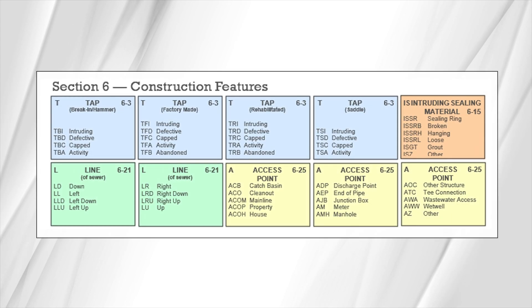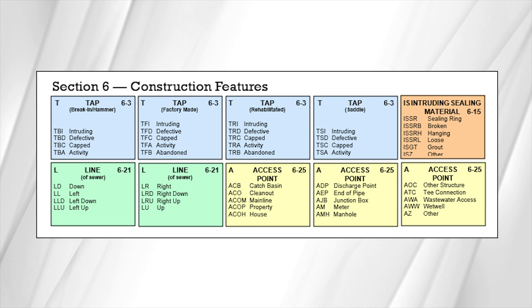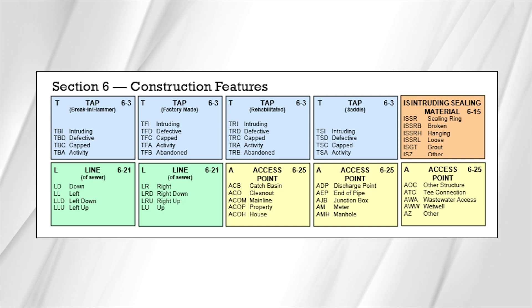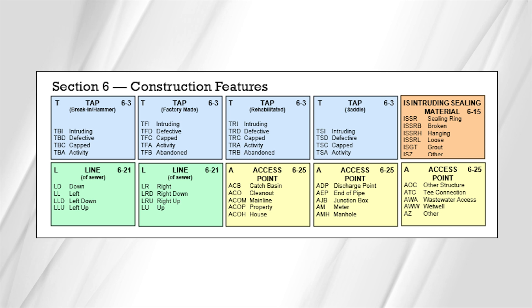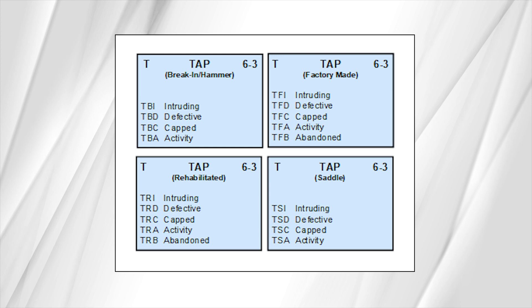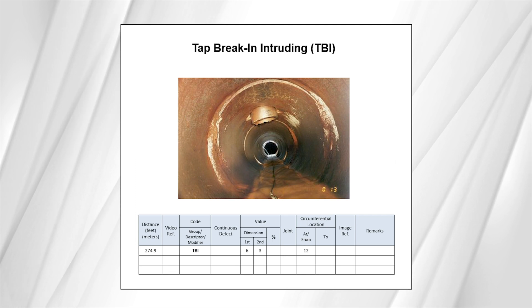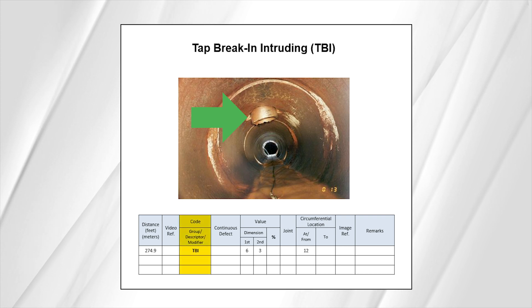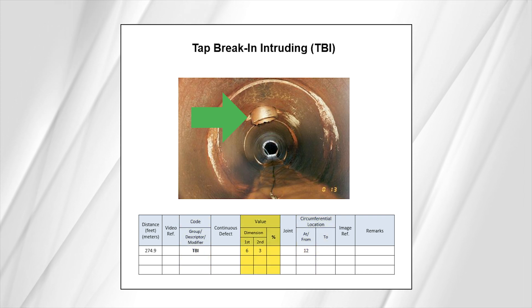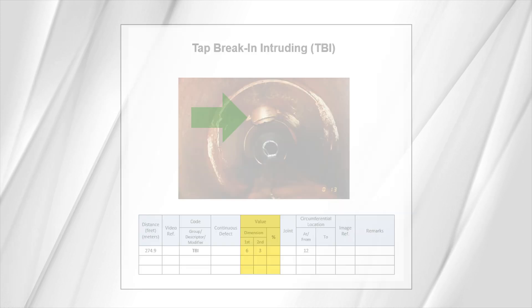The third family of codes is construction features. These codes are used to describe various features and conditions associated with the methods used to construct and connect pipes. We will highlight taps, access points, and line codes. Tap codes are used to describe various kinds of taps connecting the service pipe from buildings to the main sewer. In this example, the break-in tap, or a portion of it, intrudes into the sewer main. It is coded as TBI at 12, with the value column, dimension 1 and 2, completed to show the tap diameter and amount of intrusion, respectively.